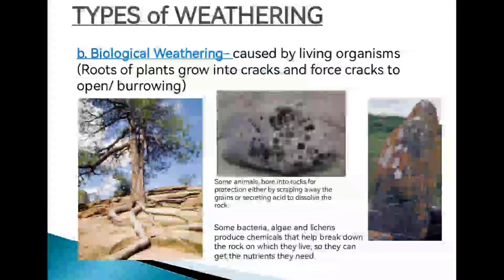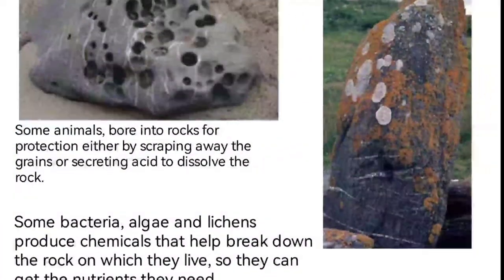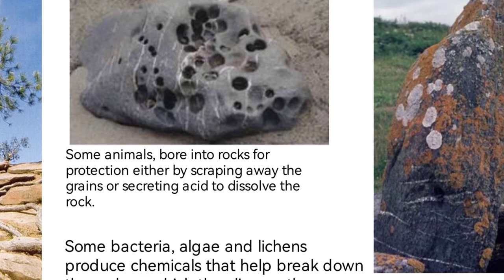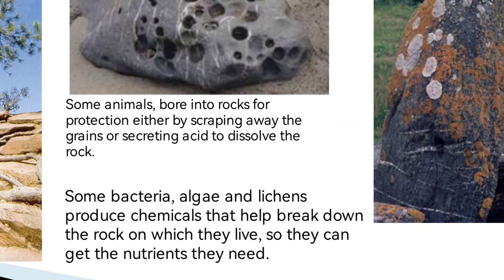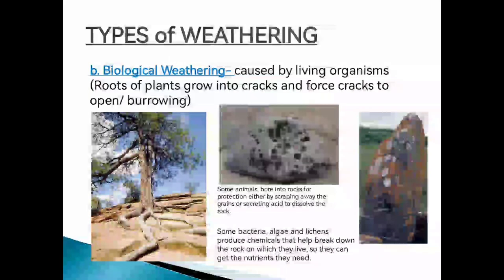In the third picture, you can see lichens, bacteria, and algae growing on rocks. They help break down the rock on which they live so they can get the nutrients they need. Over many years, because they produce chemicals, those chemicals cause different reactions in the rocks, releasing minerals that react with other minerals and causing further weathering. These are the effects of living organisms on the weathering of soil — this is biological weathering.